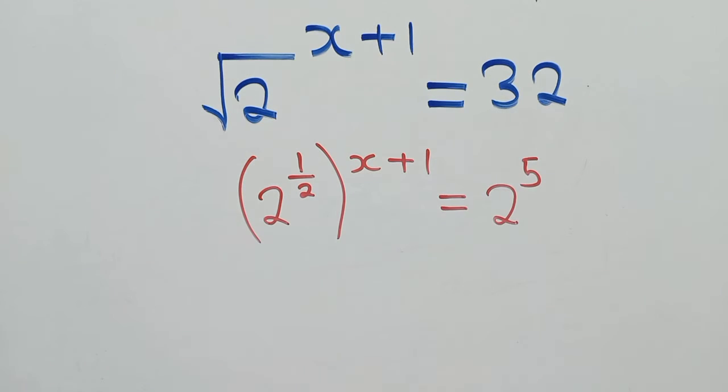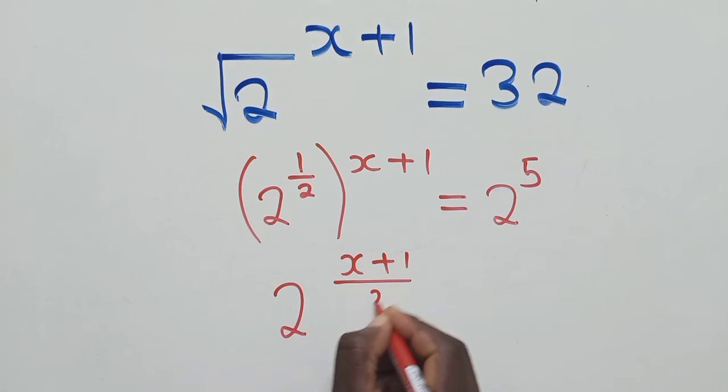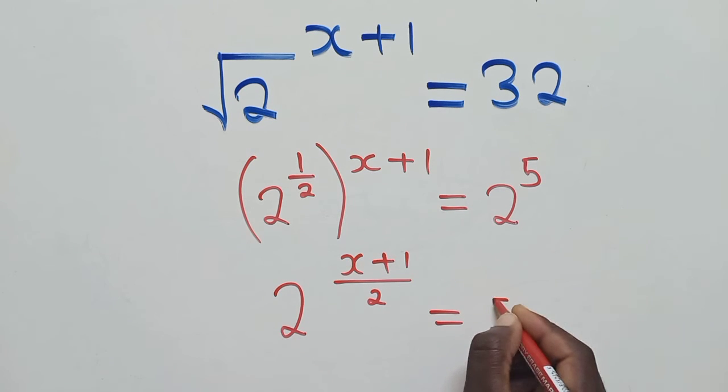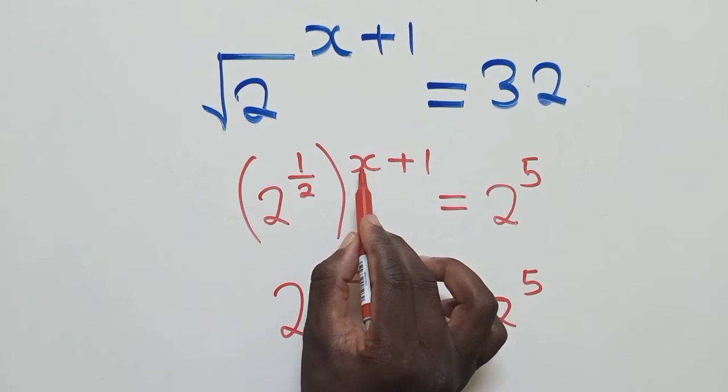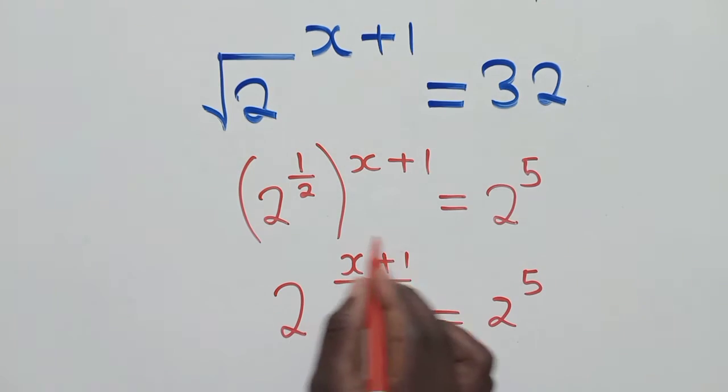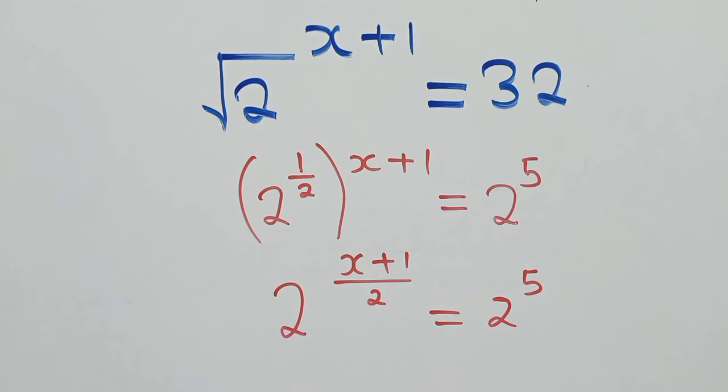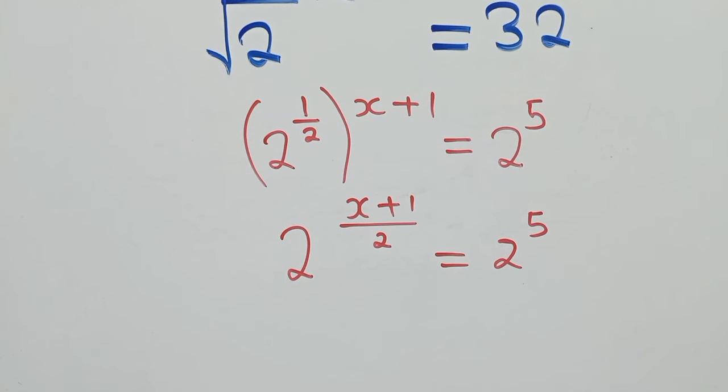So it will be 2, power x plus 1 over 2 is equal to 2 power 5. So this 1 over 2 times x plus 1, this is what we're getting as a power when we multiply. Now, from this stage, the work looks very easy, and we're almost there.